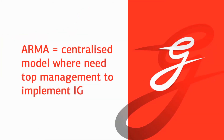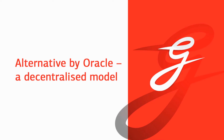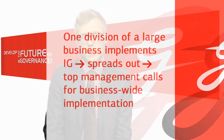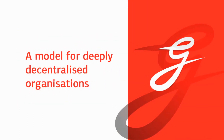The example we just discussed was basically a centralized model, where top management is necessary in order to implement information governance. There are actually alternatives, and one of them is by Oracle. In the decentralized model, one of the divisions of a larger organization starts to implement information governance, then it spreads outward until top management realizes the benefits and decides to implement it organization-wide. This kind of model works best in extremely decentralized organizations.